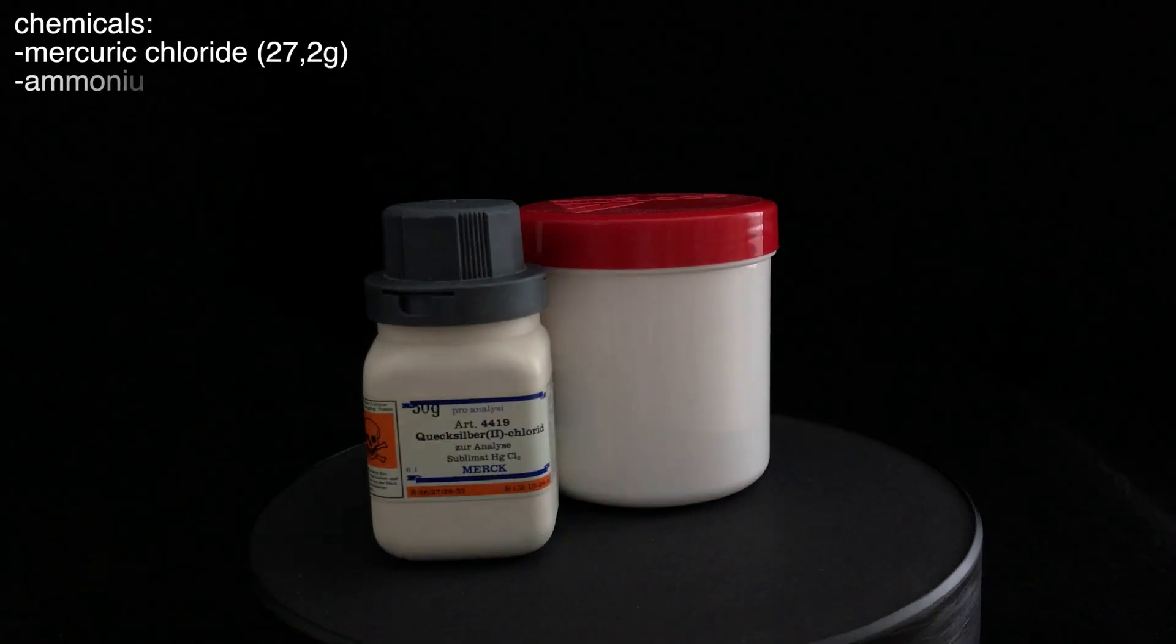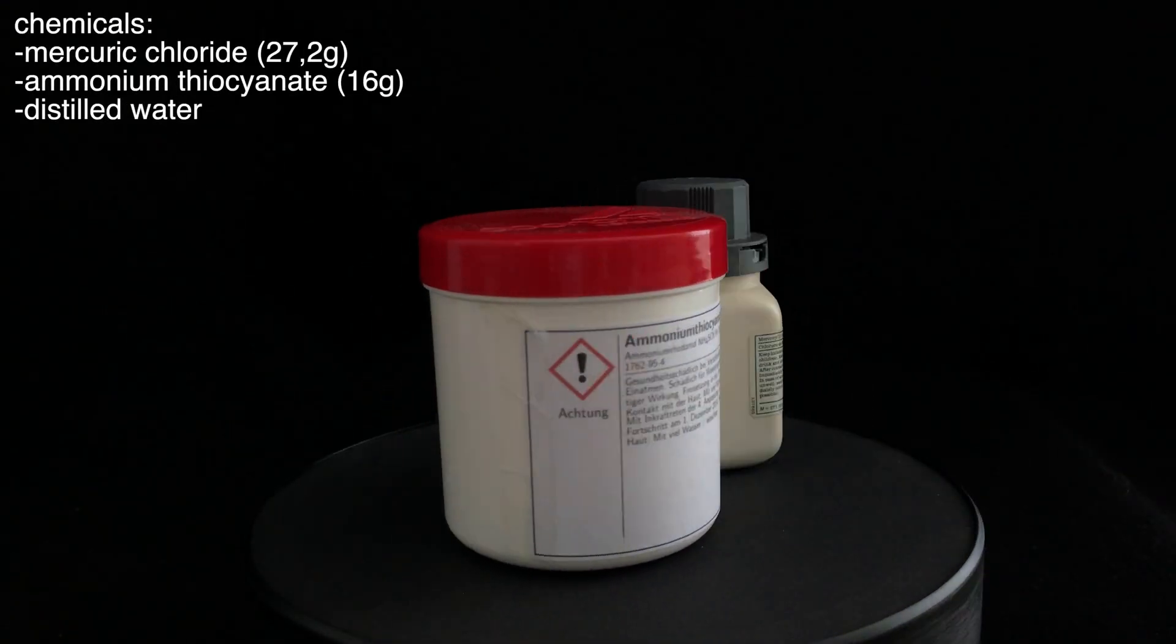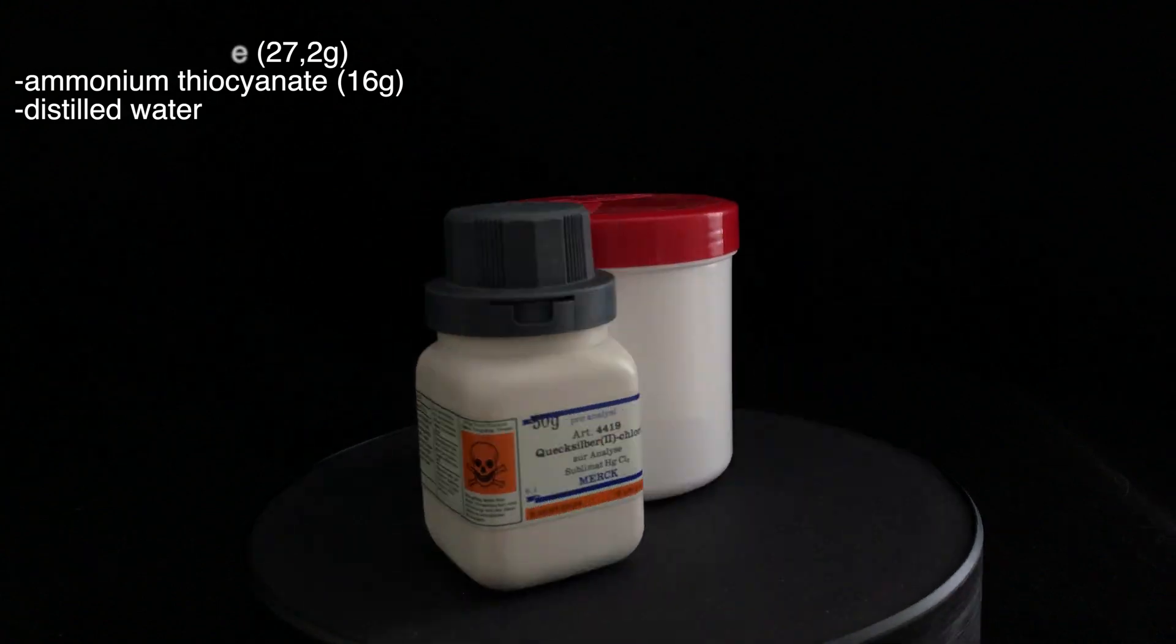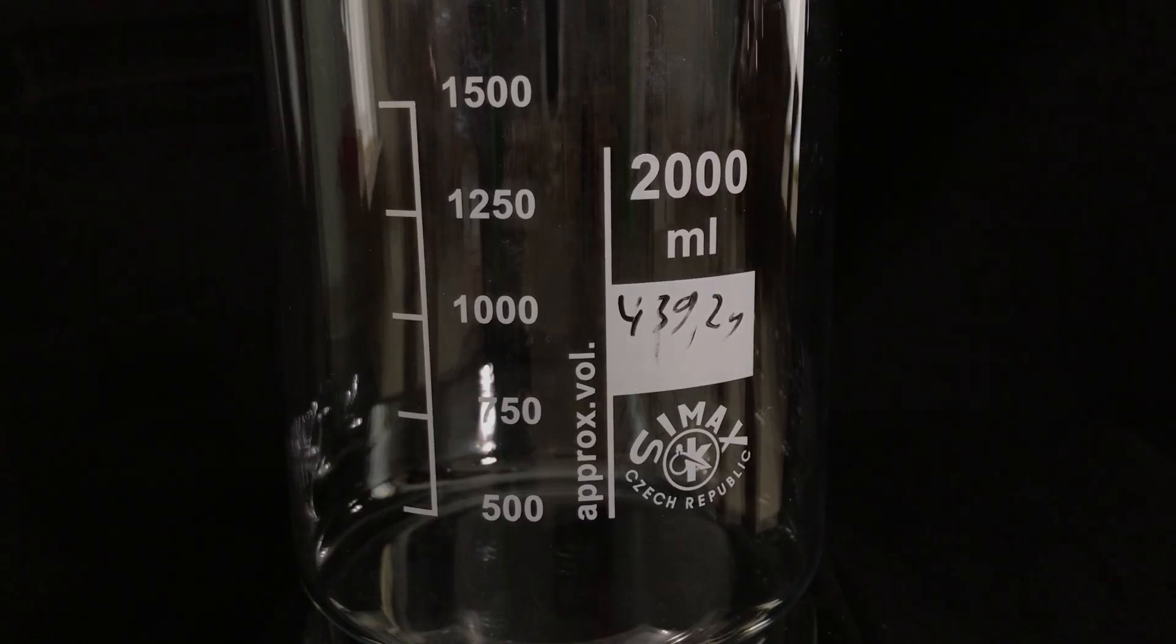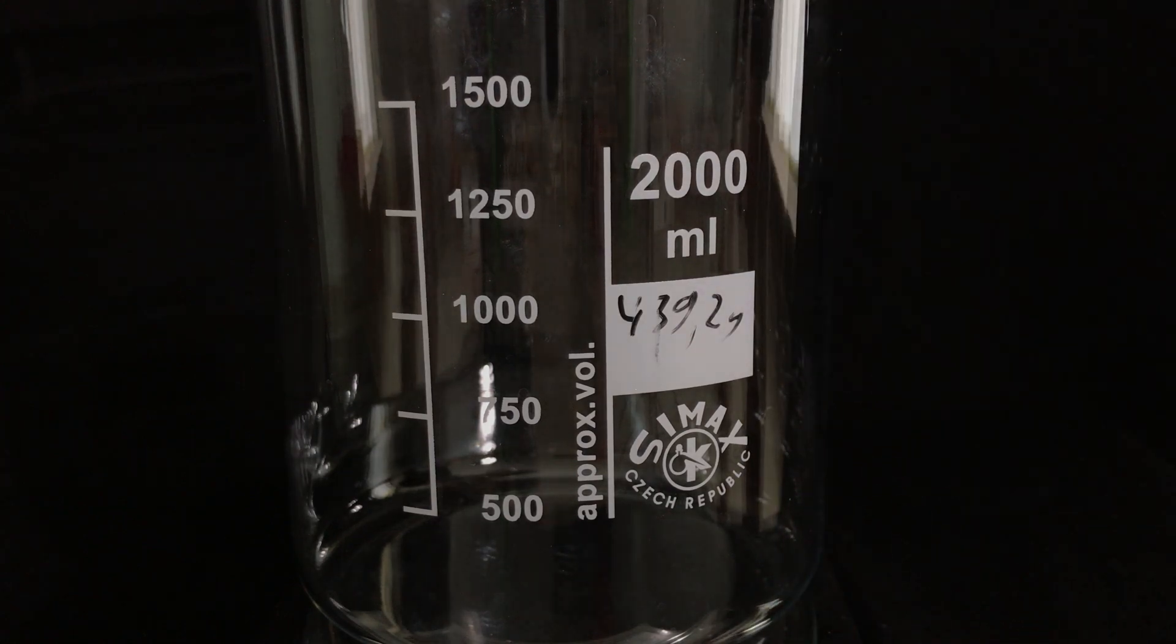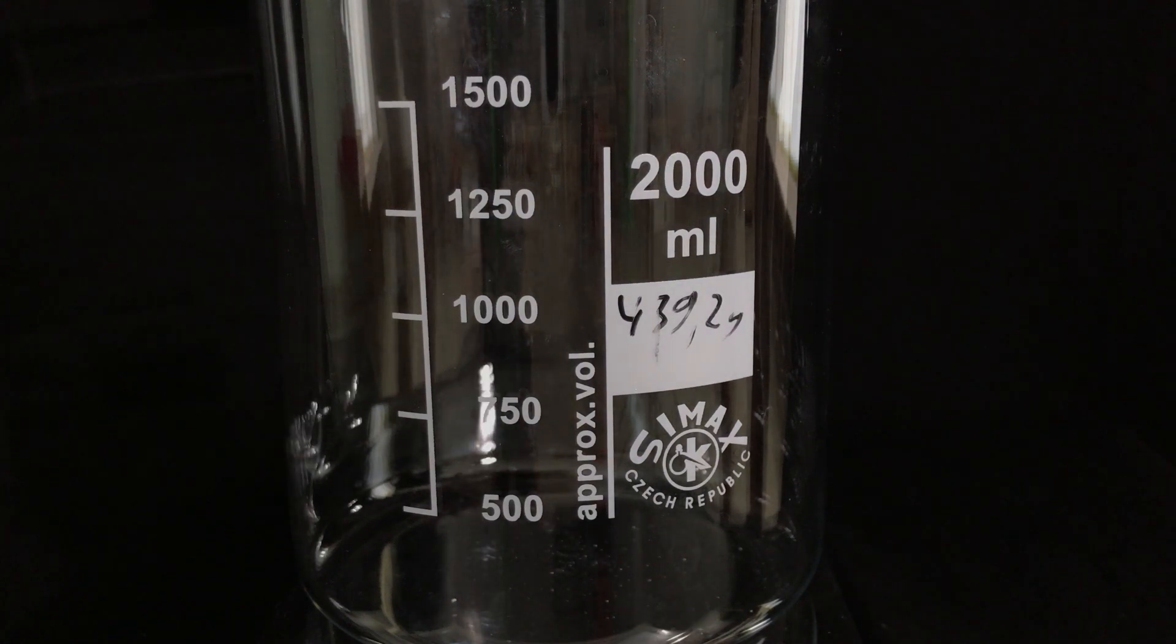The chemicals needed for this are quite simple. 27.2 grams of highly toxic mercuric chloride and 16 grams of ammonium thiocyanate. We then started off by adding the mercuric chloride to the beaker. We made sure to go as slow as possible because spilling any mercuric chloride would be a disaster.